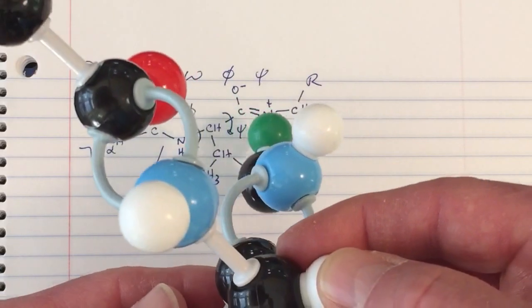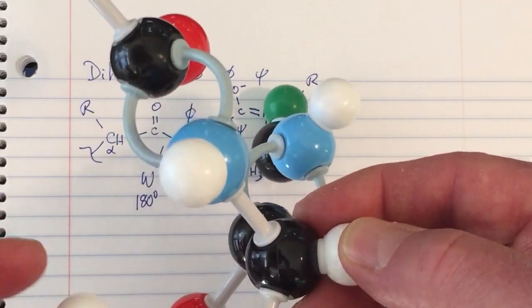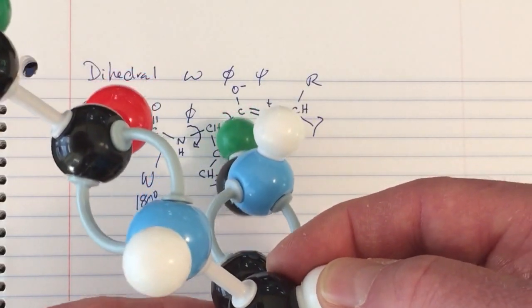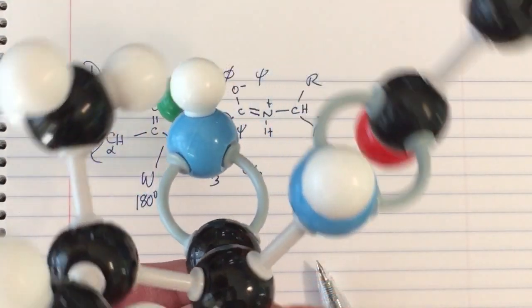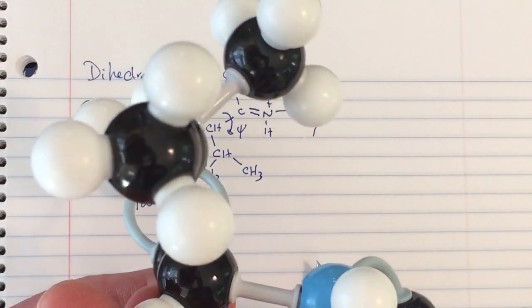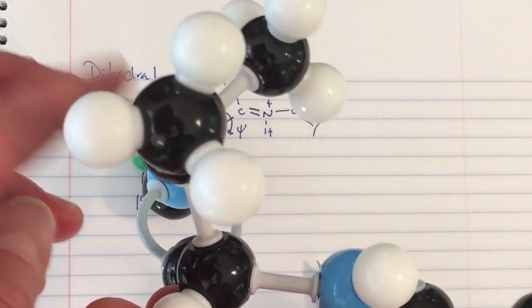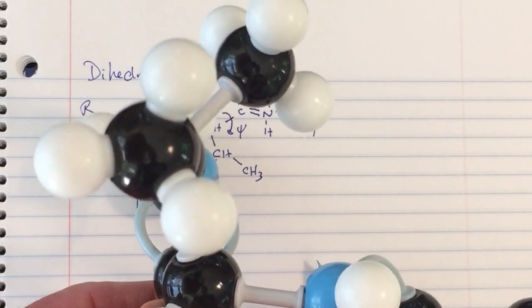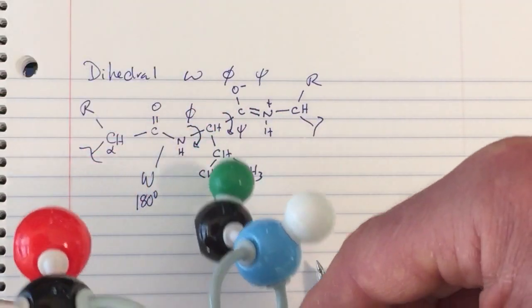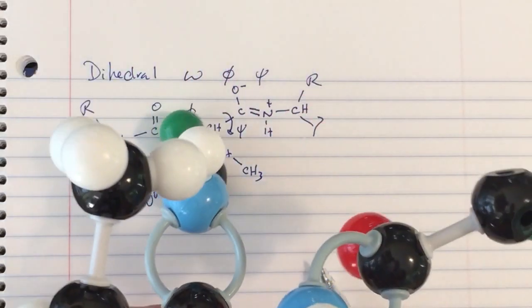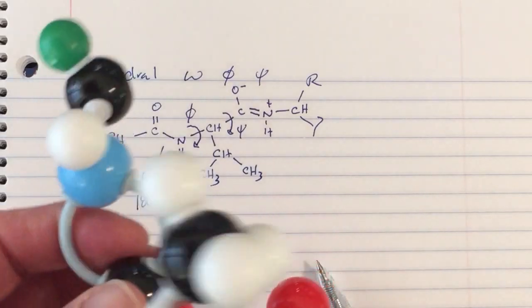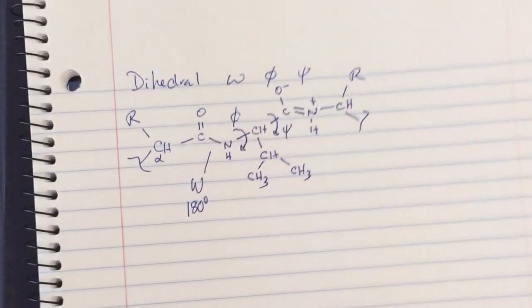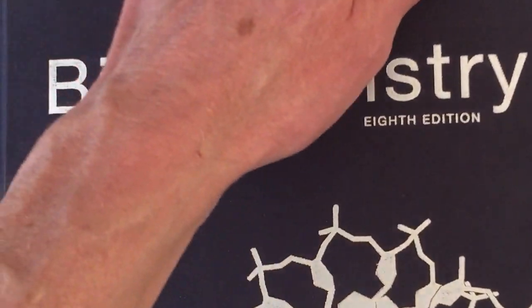It avoids values corresponding with positive 60 degrees because the carbonyl carbon and this side chain are eclipsed with each other. The same thing happens at minus 20 degrees because the amide nitrogen and the side chain are eclipsed. So there's a larger range of values adopted for Psi, but we avoid certain values.